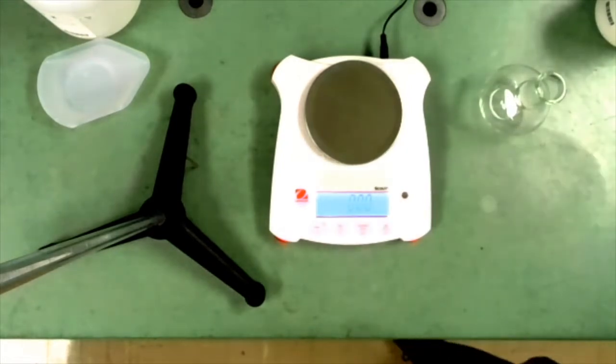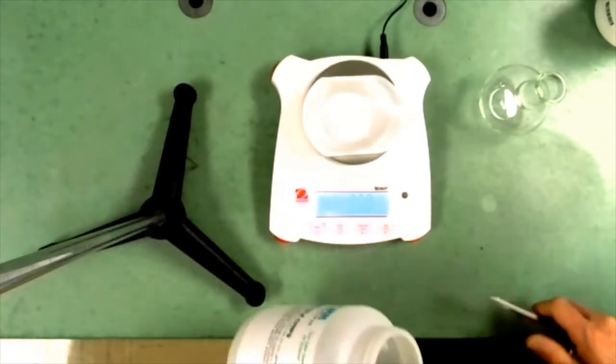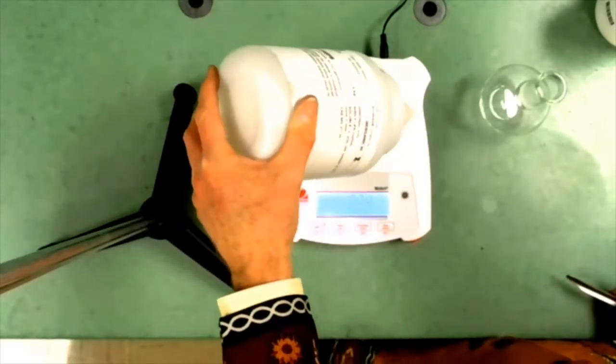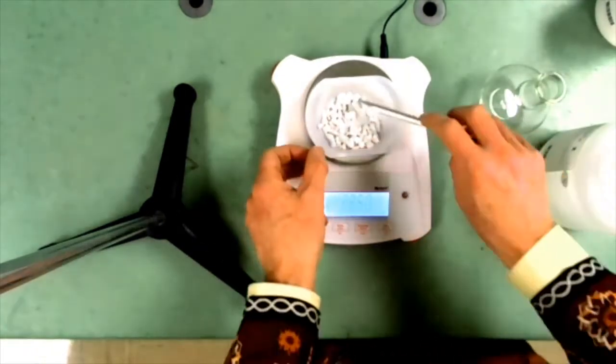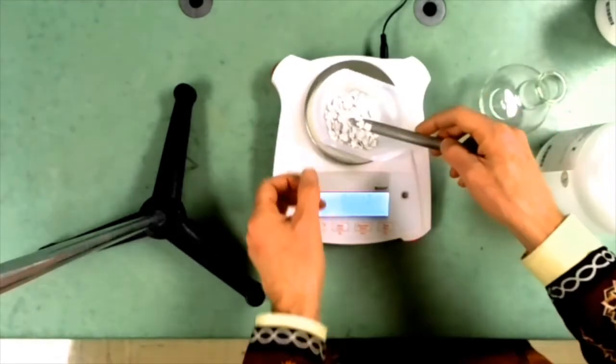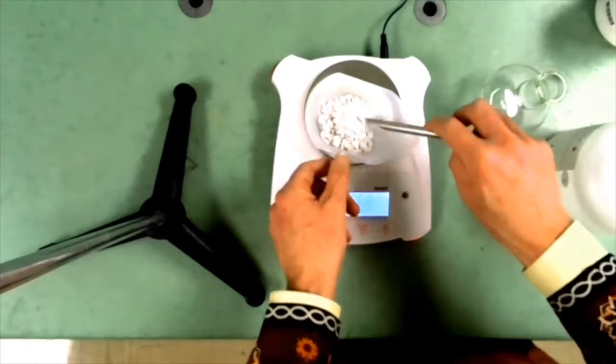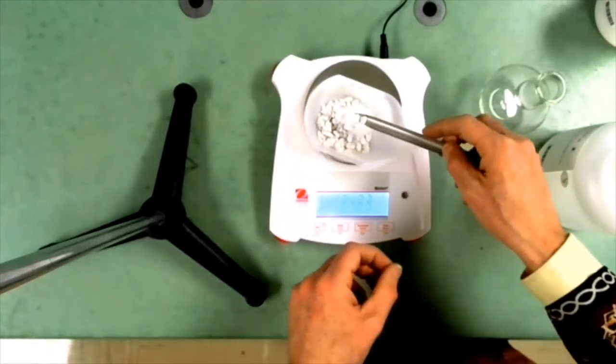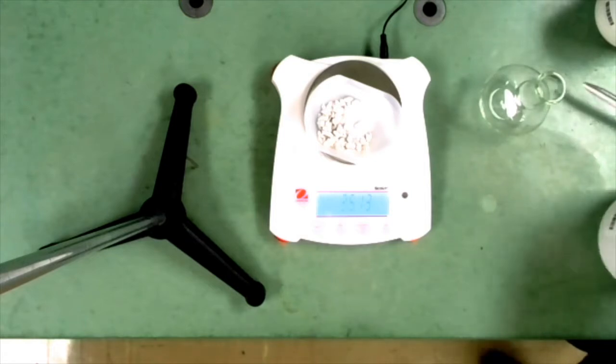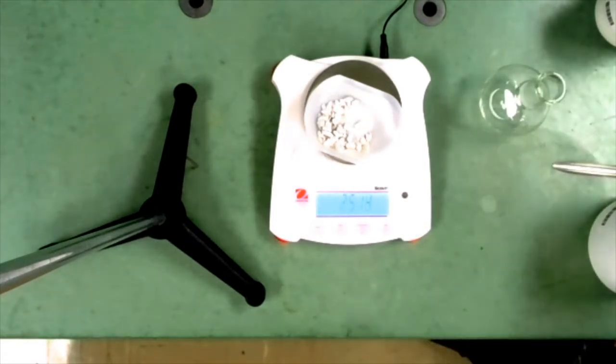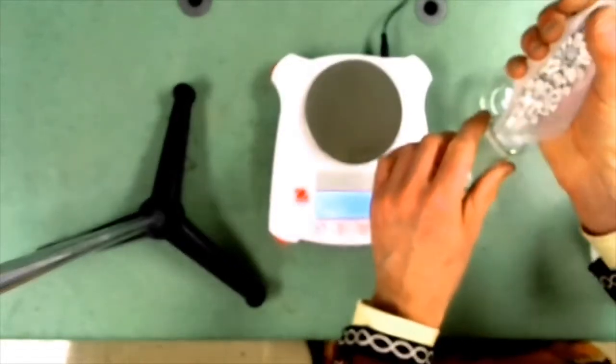Next we need to get some marble chips for the generating flask. Marble is calcium carbonate. We want 25 grams of marble chips. 27, pretty close, 26 and a half, 25.7, the exact amount here is really not critical. 24.8, 25.1, that's close enough for sure. I'm going to add that to the generating flask. The 25.14. I add the marble chips to the Florence flask that's going to be generating the gas.